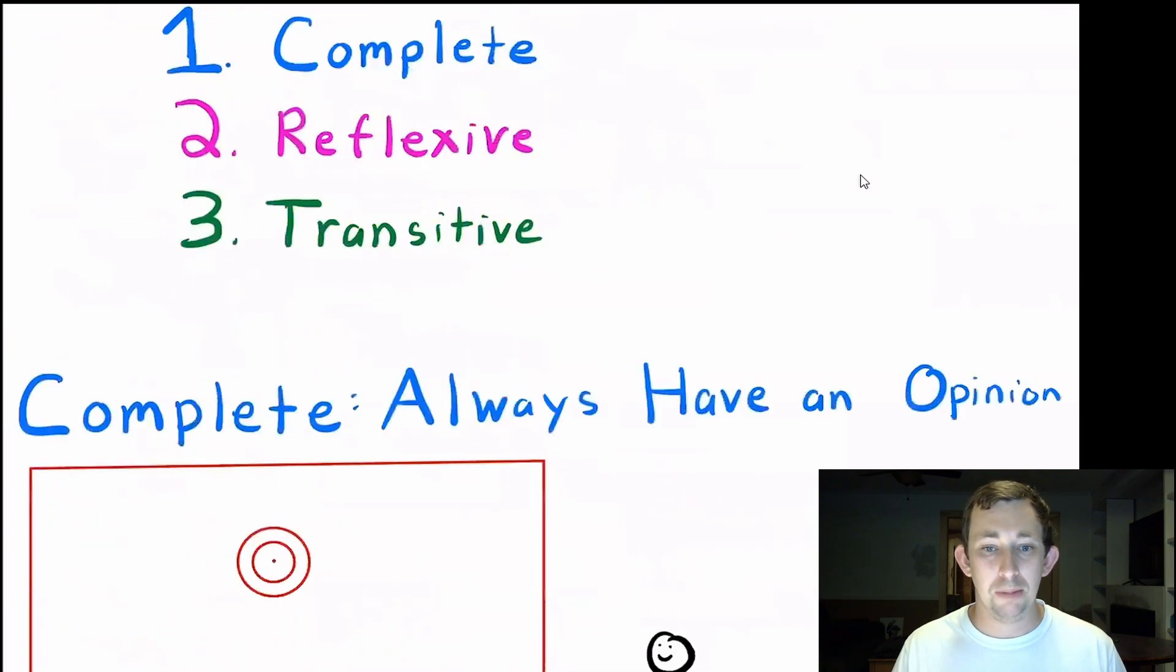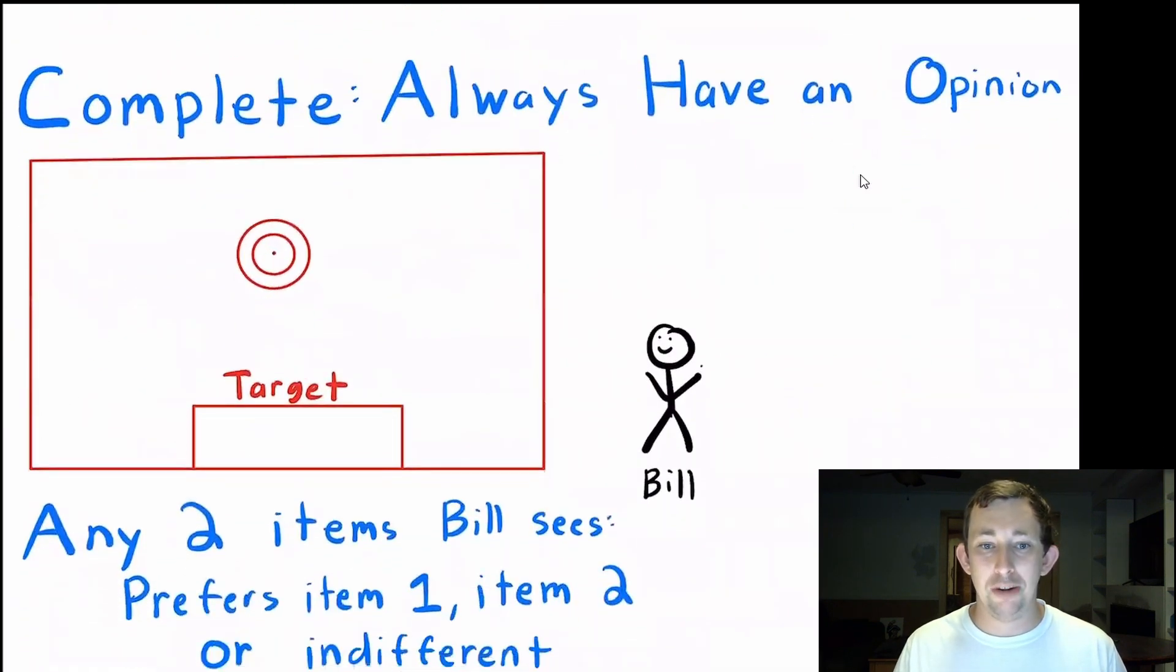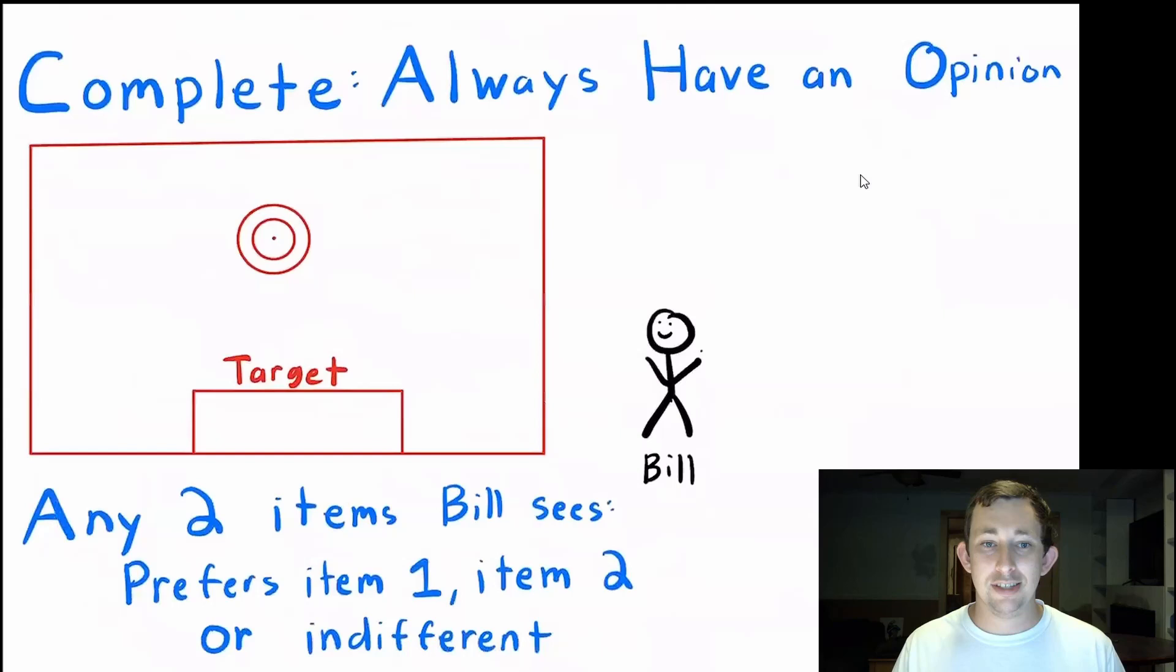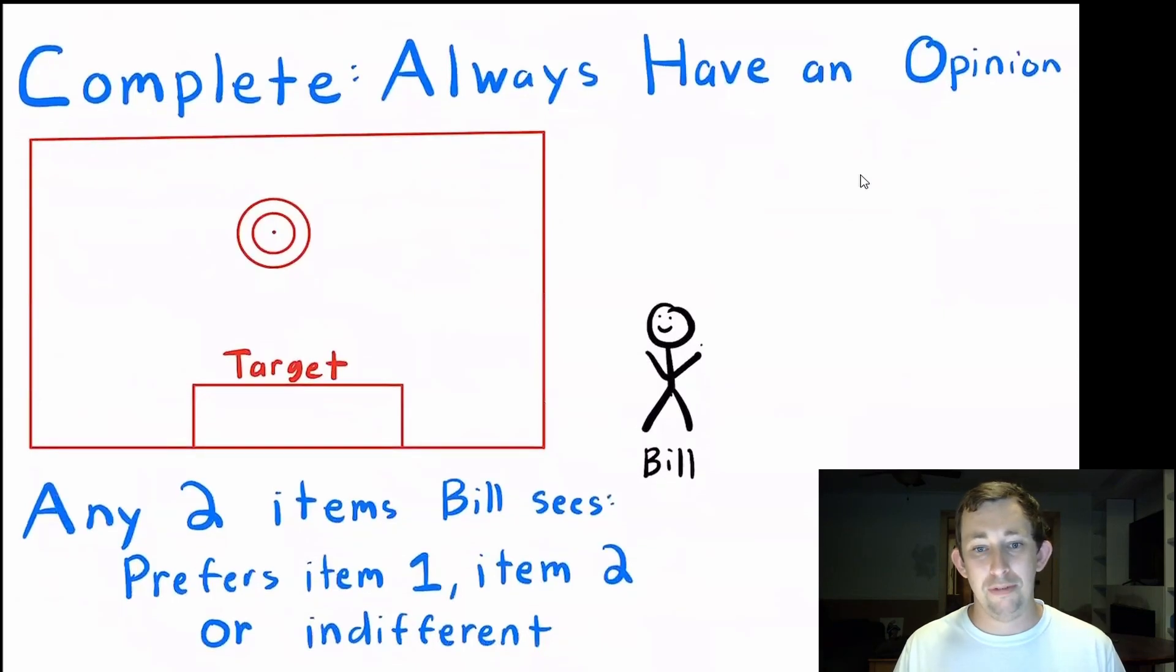What does it mean to be complete? To be complete just means that you always have an opinion. So Bill walks into a Target, you could give Bill any two things in that Target, and he could say, I prefer this one, or I prefer that one, or I'm indifferent between the two. And Bill could do that for any single item that you give him in the whole entire world.